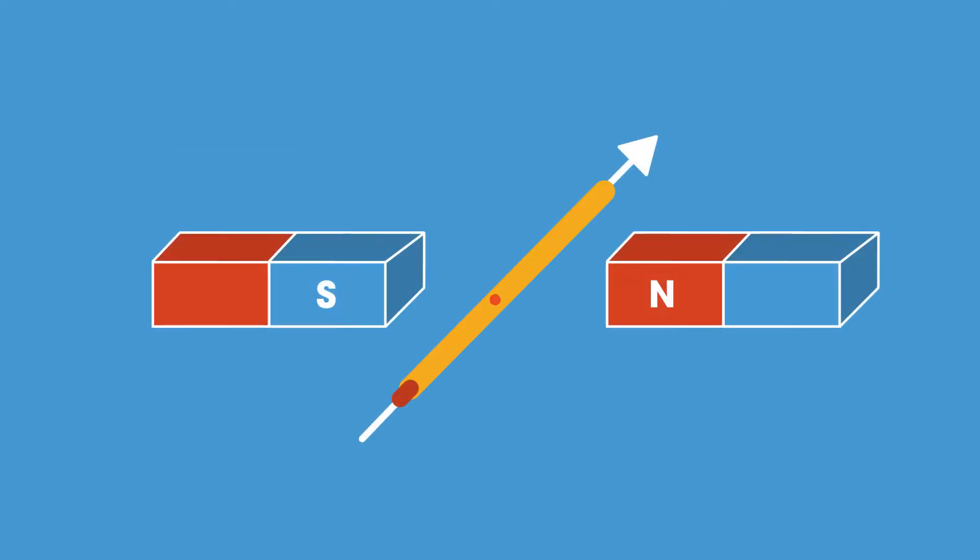To show which way the current is flowing in diagrams, we use this symbol. We imagine we are looking at the point or end of an arrow to represent a current flowing away from you into the screen. This cross in a circle represents the flights of the arrow going away from you.